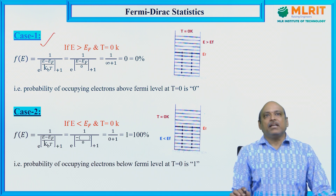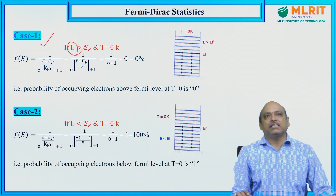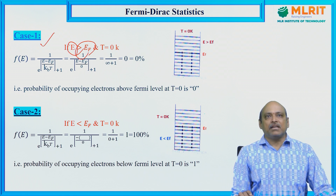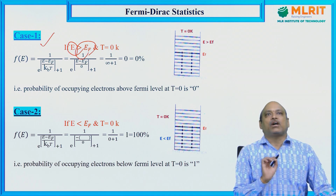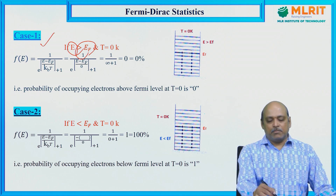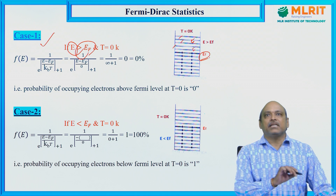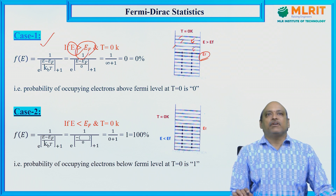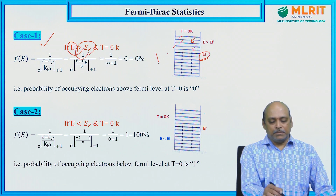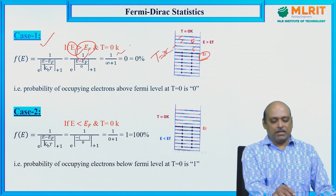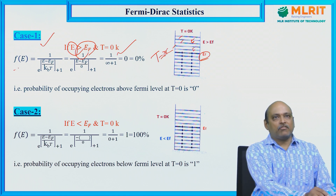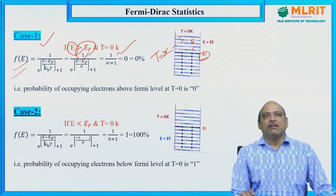Case 1: The given energy level E is greater than EF (above the Fermi energy level), and the system temperature is 0 degree Kelvin. I want to find the probability of occupying an electron above the Fermi energy level when T = 0 K.